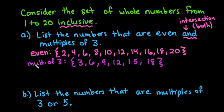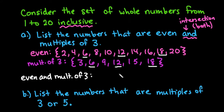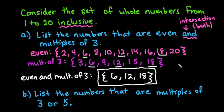Now what we're going to do is, because we are looking for the intersection, we're looking for the numbers that appear in both. We have a 6 in both of them, a 12 in both of them, and an 18. So the numbers that are even and multiples of 3 between 1 and 20 inclusive are 6, 12, and 18. This would be our final answer.